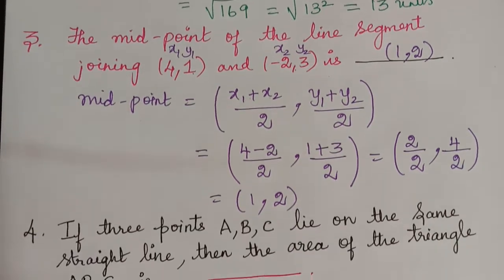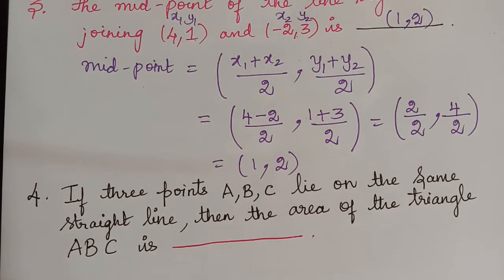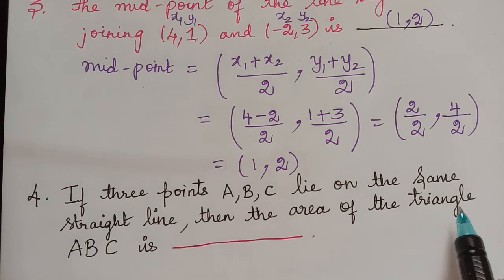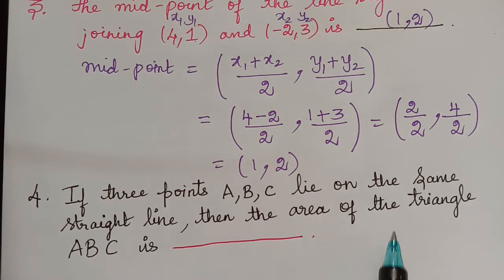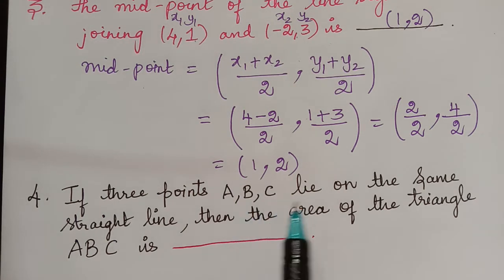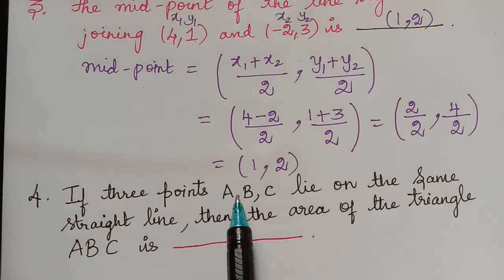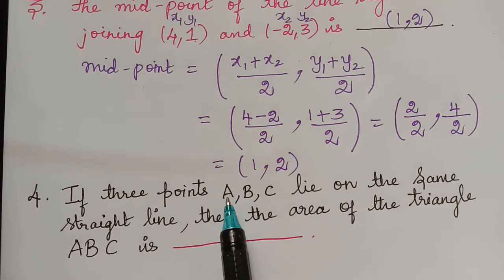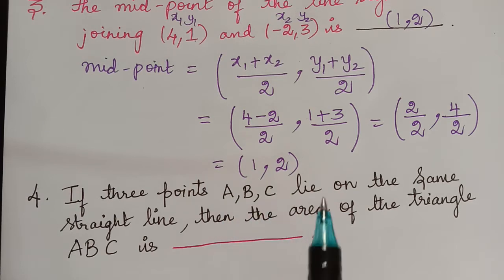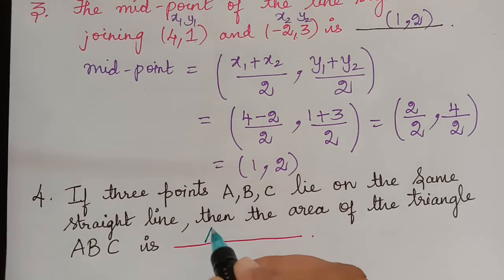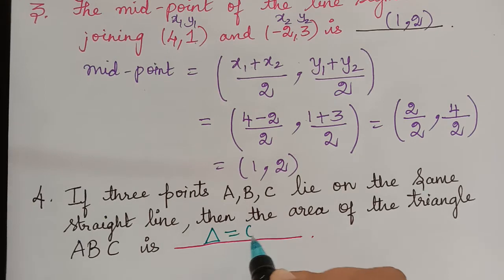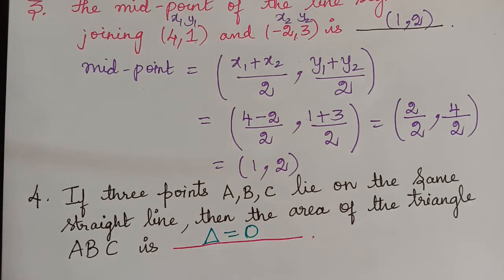The next question is: if three points A, B, C lie on the same straight line, then the area of triangle ABC is dash. We know that if three points are collinear, the area of the triangle is equal to 0. Here the three points A, B, C lie on the same straight line, which means they are collinear, and hence the area of the triangle will be equal to 0.